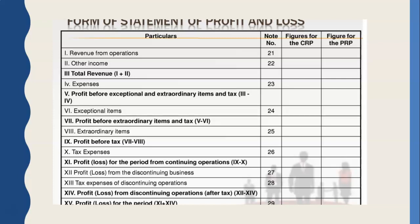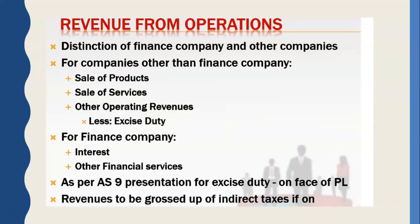The format of the profit and loss account starts with revenue from operations, which is the main income. The second item is other income, which is not their regular income. Third is expenses, then profit before exceptional and extraordinary items and tax, then extraordinary items, profit before tax, taxation expenses, and finally profit for the period from continuing operations. Revenue from operations means sale of products, services, etc. In the case of a financial company it will be interest and other financial services.